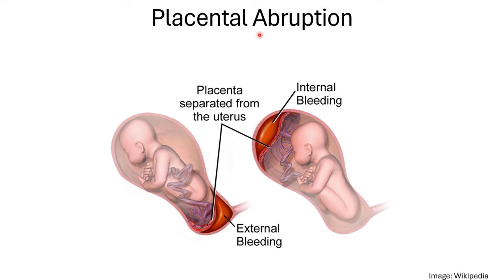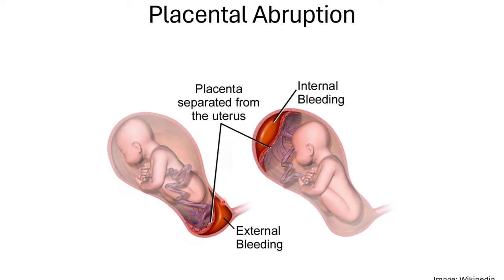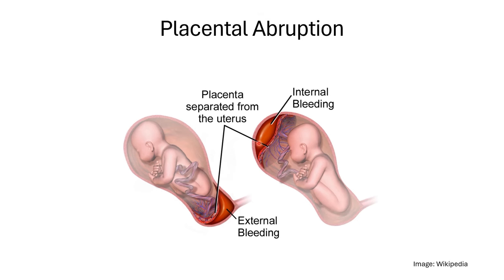Placental abruption is a situation where the placenta gets separated from the uterus earlier than it should. We all know that after delivery of the baby the placenta is delivered, but in abruption the placenta separates from the uterine wall prematurely. This can cause bleeding in that area — either external bleeding, where the mother presents with bleeding per vaginum, or internal bleeding.